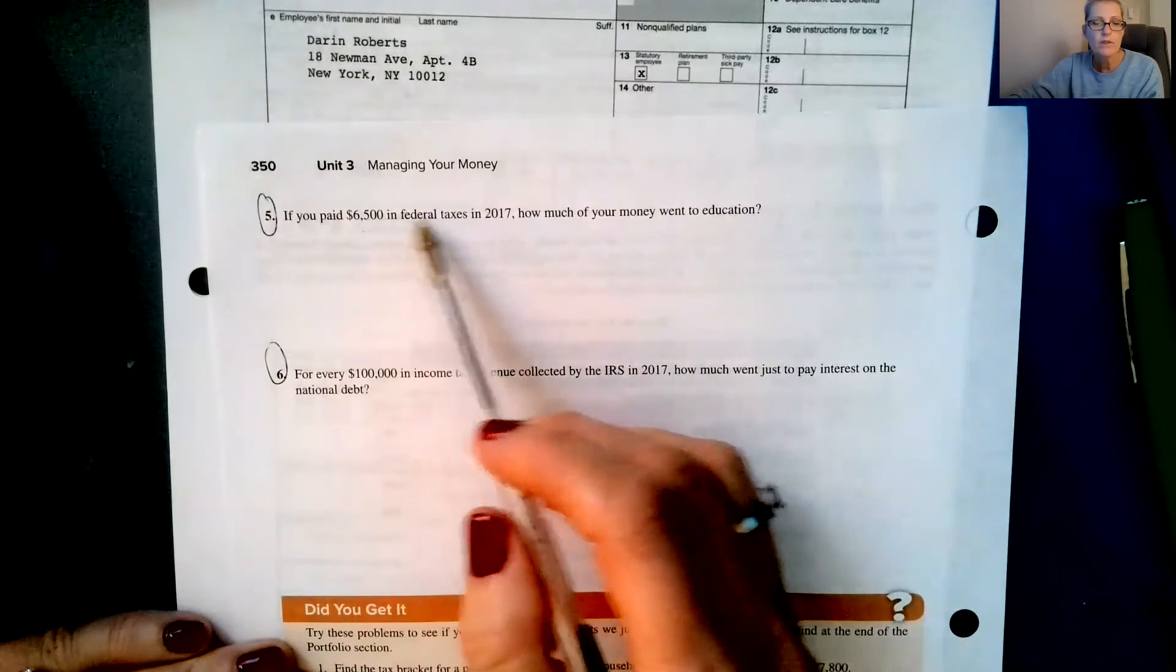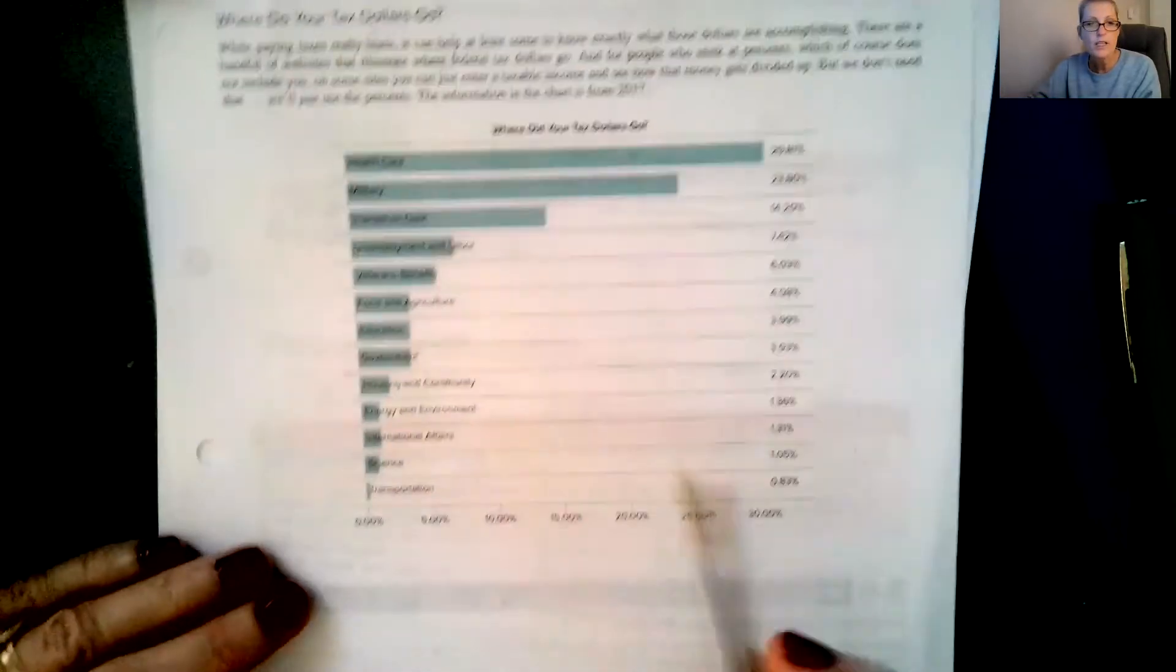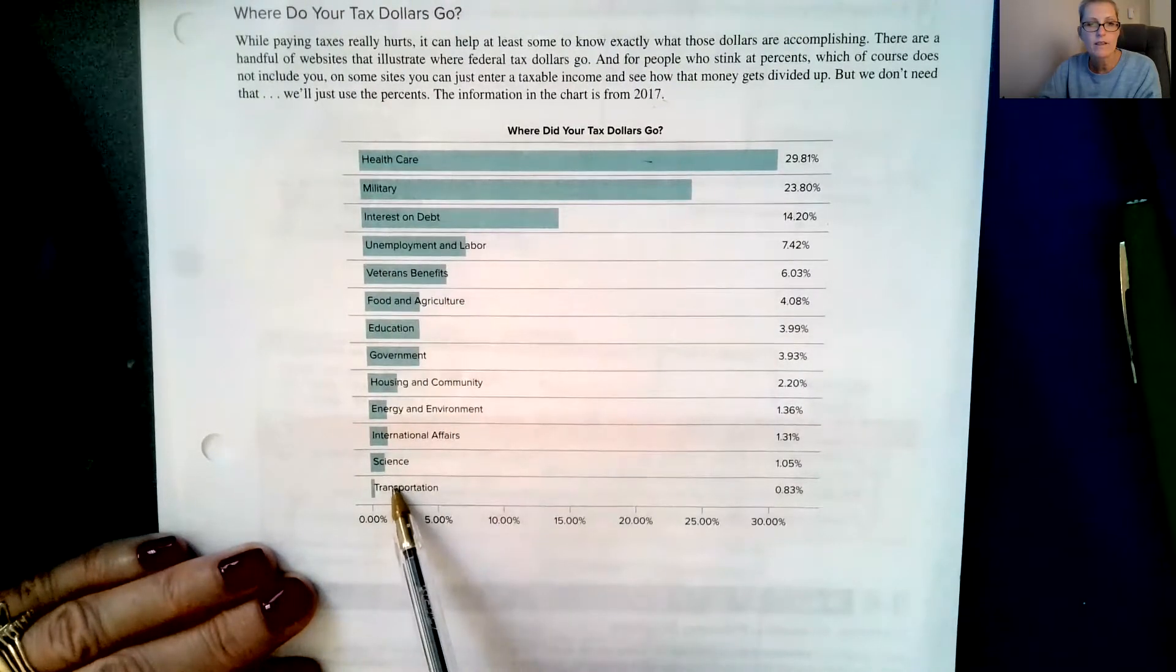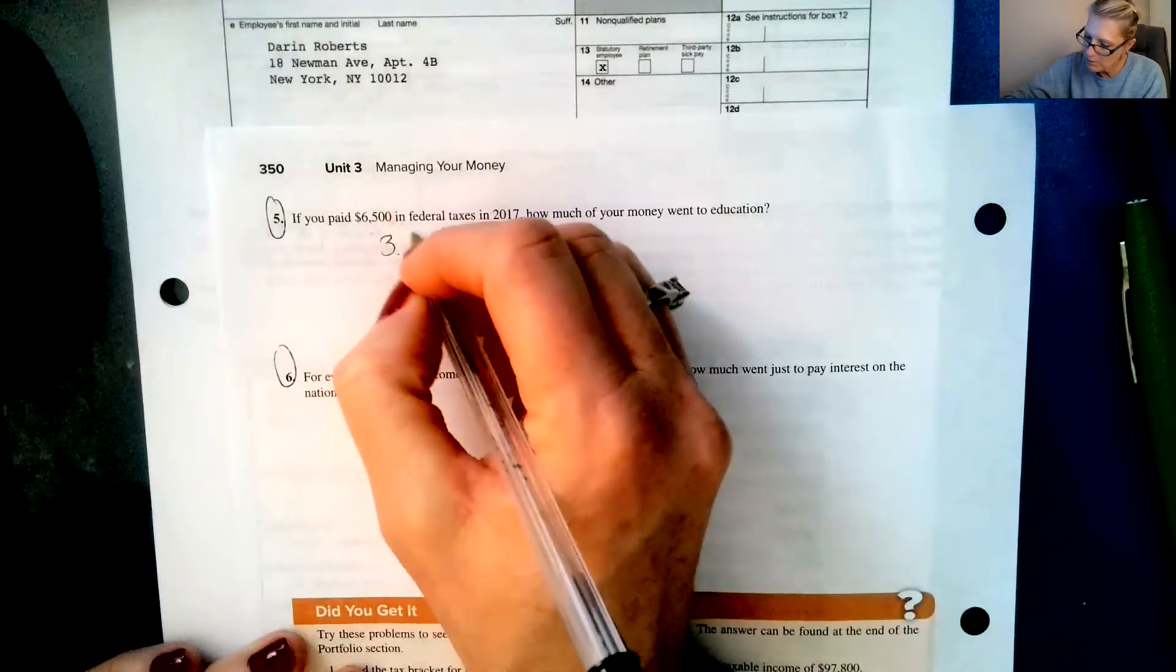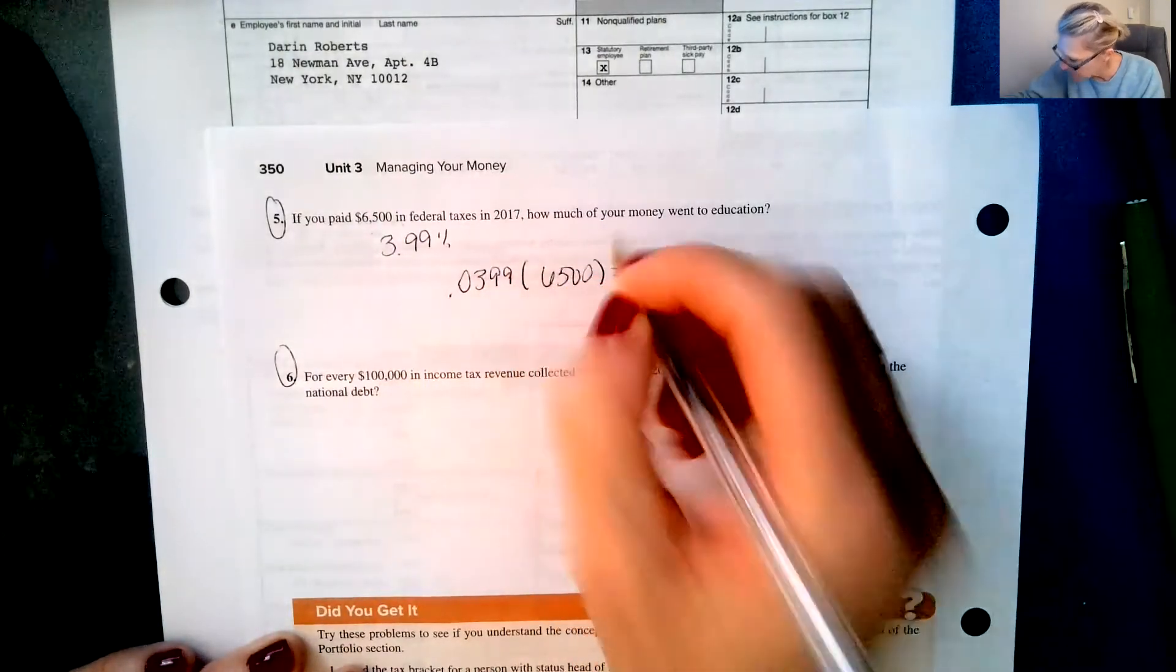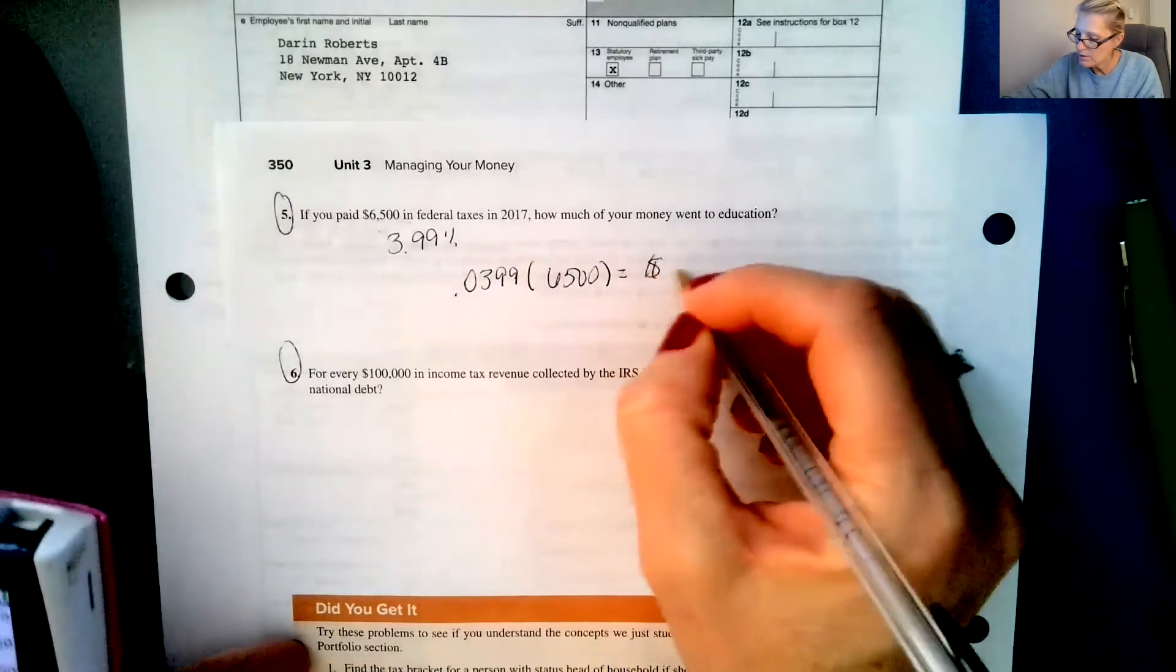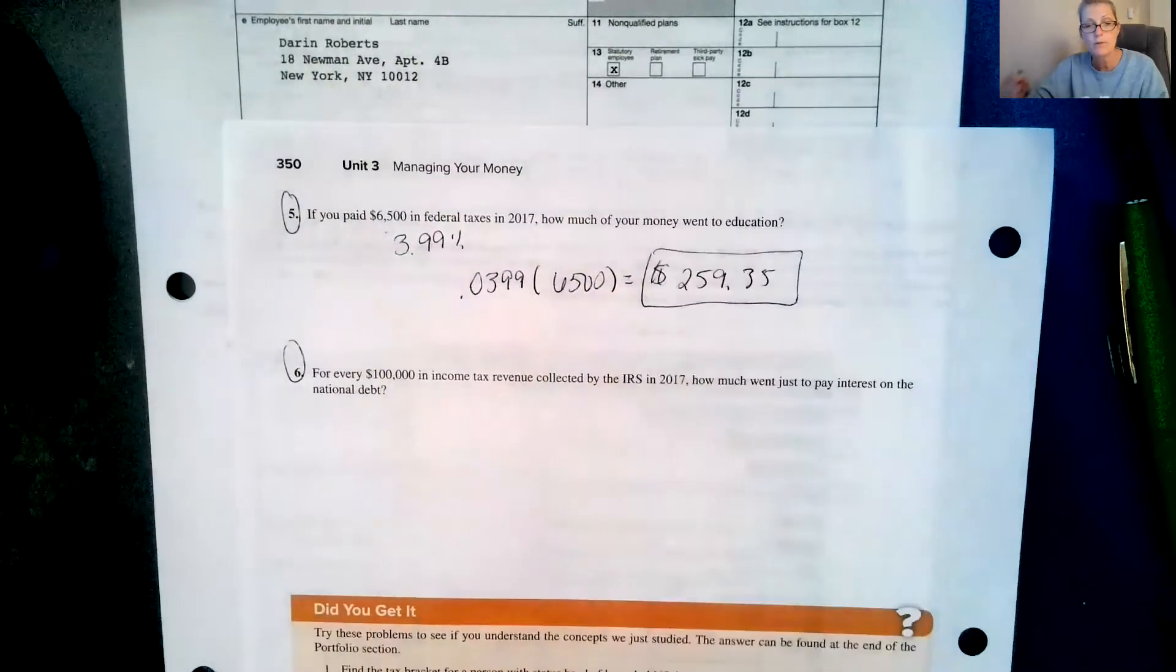So our last two questions are five and six on page 350. If you paid $6,500 in federal taxes in 2017, how much of your money went to education? So education is right here, and it was 3.99%. So 0.0399 times $6,500, and so that means $259.35 went to education from your taxes.